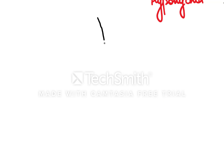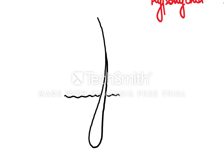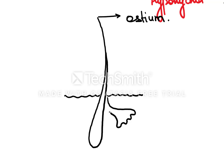Now if you see the hair follicle, it appears something like this. The tip of the hair follicle is known as the osteum, and in the root of the hair follicle there is an opening of the sebaceous gland.